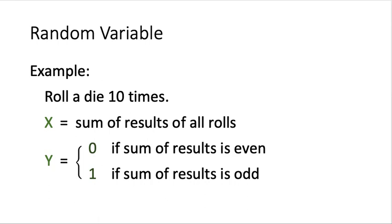Let's see an example. Suppose that our experiment is to roll a die 10 times. In such a case, we have 6 to the power 10 different outcomes. We let X be a function which calculates the sum of all the results of the rolls. For each outcome of the experiment, X will compute a different value. The value that X can take on ranges from 10 up to 60. So in such a case, X can only take on a finite number of values, and this X is a random variable.